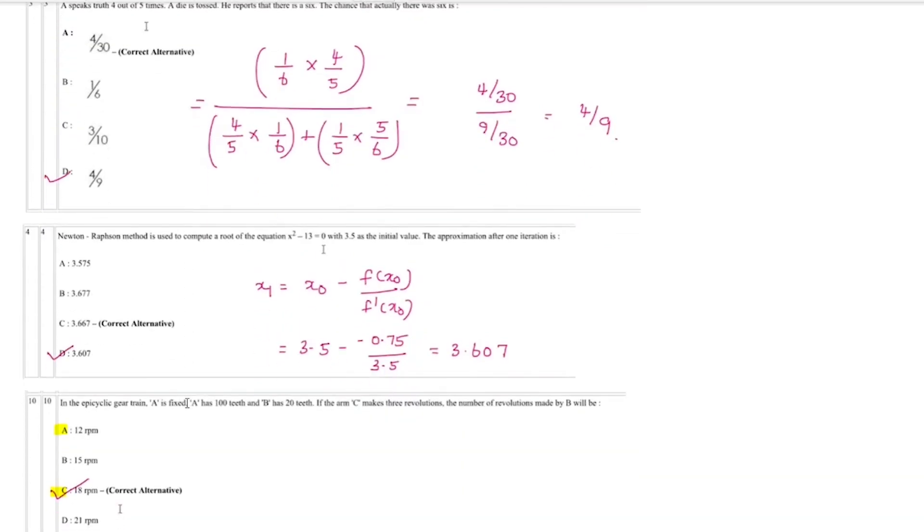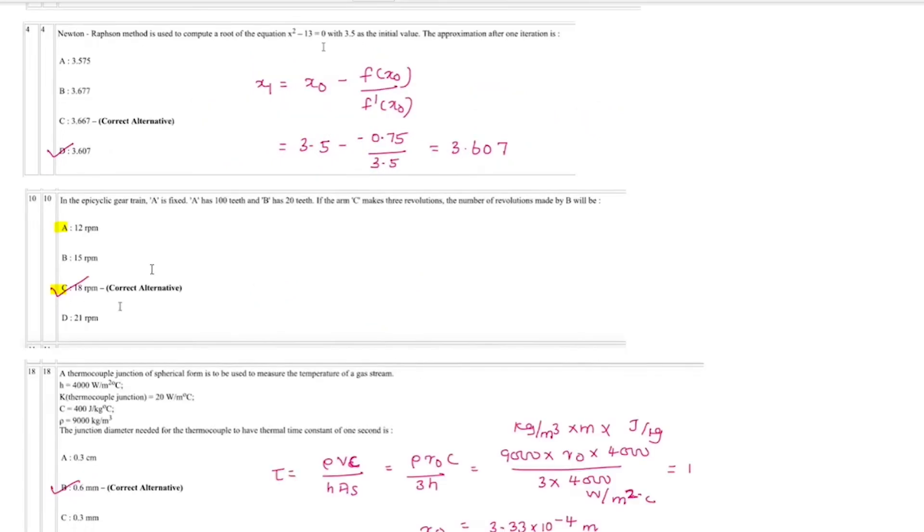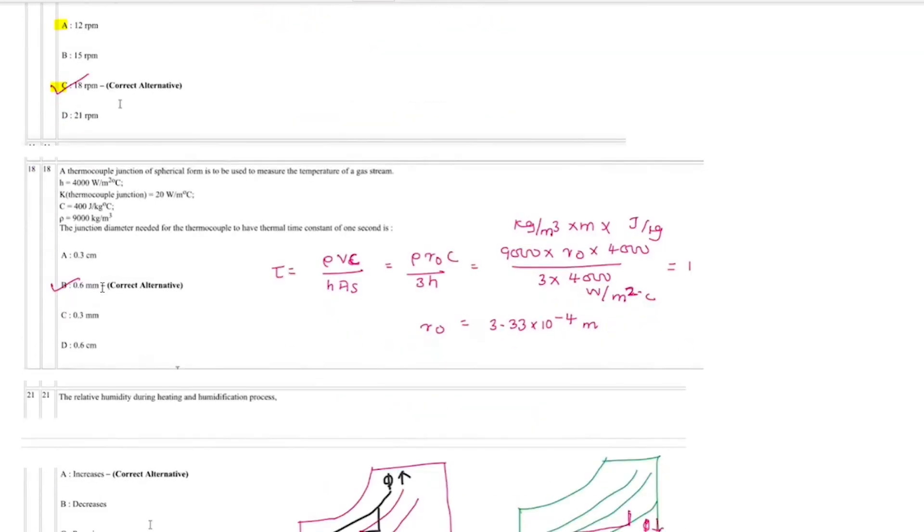The second question is Newton Raphson, which is 3.607, so that is changed. For question 18, the answer is A and C. The advantage is the answer. Question 18 involves a calculation.